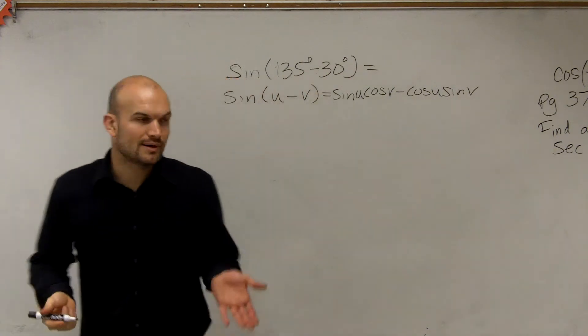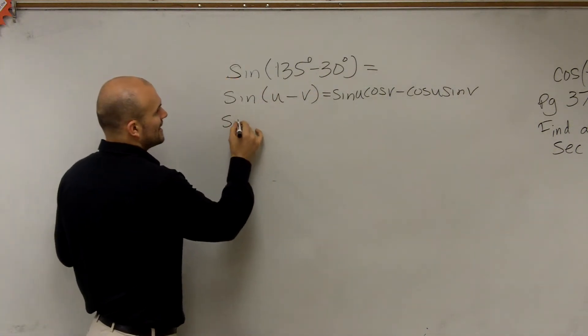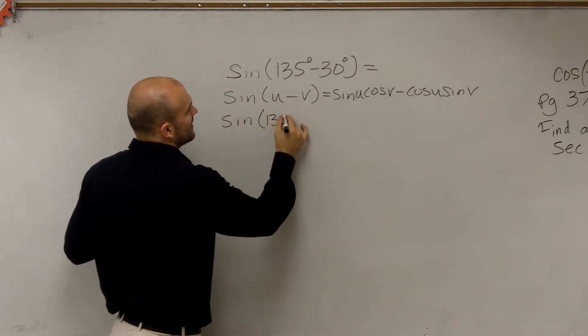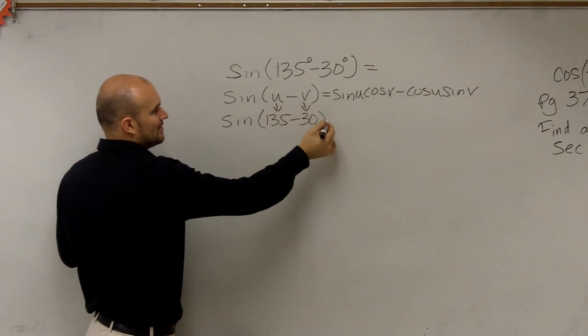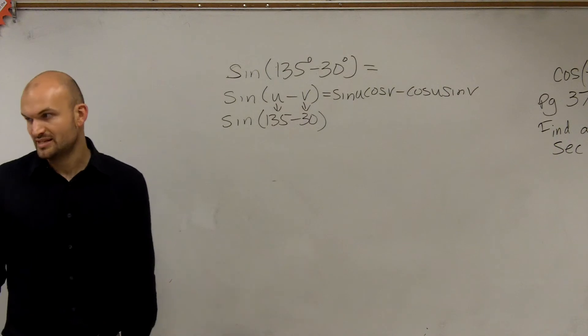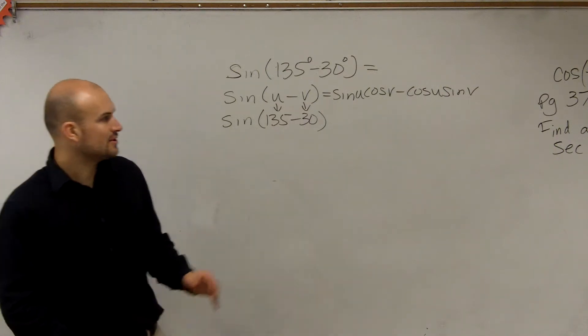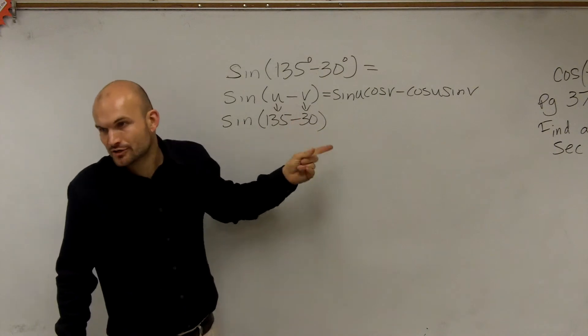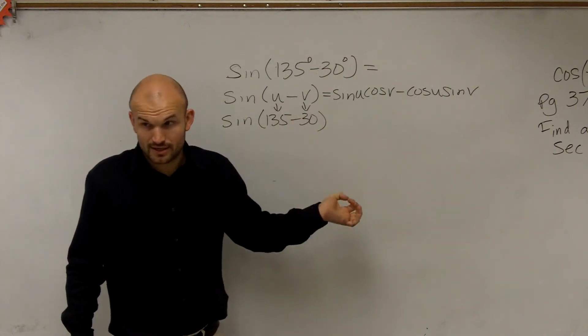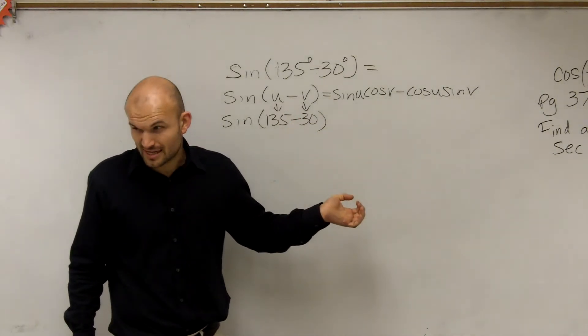All right. So now what I need to do is identify my angles. Now my angle is sine of 135 minus 30. So I could say that's my u and that's my v. Makes sense? Now the one thing to remember is it's u minus v. This is not a negative 30 degrees. V is 30. Does that make sense?